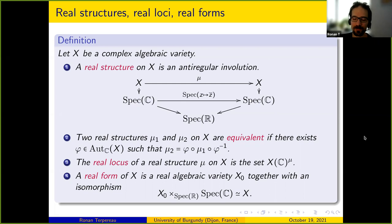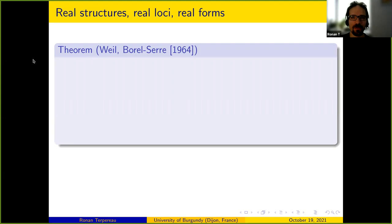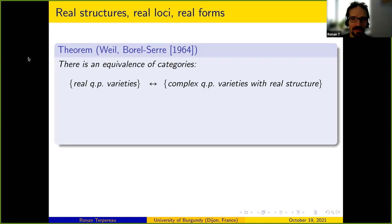You may wonder what is the relation between the notion of real structure on the one hand and the notion of real form on the other. The answer mostly follows from the work of Weil and Borel and Serre, and tells the following: there is an equivalence of categories between real quasi-projective varieties and complex quasi-projective varieties endowed with a real structure.